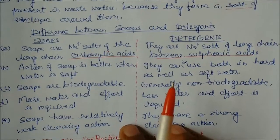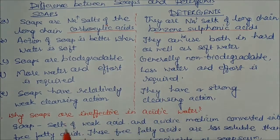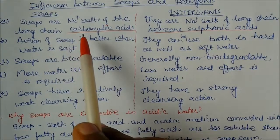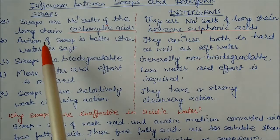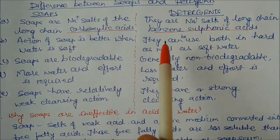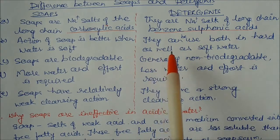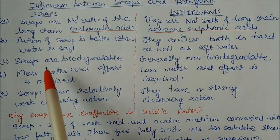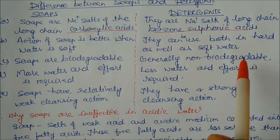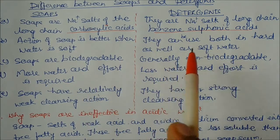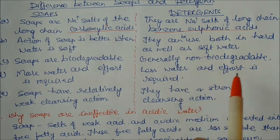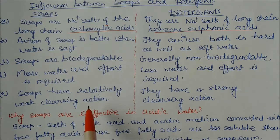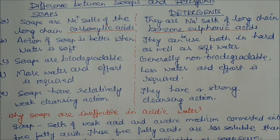The difference between soaps and detergents: soaps are sodium salts of long-chain carboxylic acids, whereas detergents are long-chain benzene sulfonic acid salts. Soaps work better in soft water, but detergents can be used in both hard and soft water. Soaps are biodegradable, while most detergents are non-biodegradable, though some biodegradable detergents exist. Soaps require more water and effort and have a relatively weak cleansing action, while detergents require less water and effort and have a stronger cleansing action.